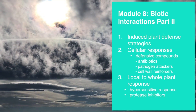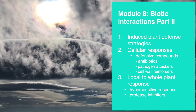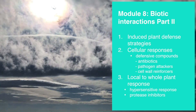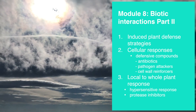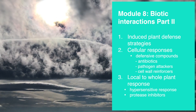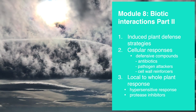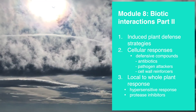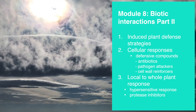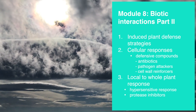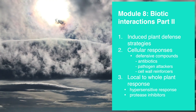That's it for today's module. Your main takeaway should be that plants have a variety of induced plant defense strategies against herbivores and pathogens. These range from cellular responses producing defensive compounds — including antibiotics, pathogen attackers, and cell wall reinforcers — to local and whole-plant responses, including the hypersensitive response at the cellular level and systemic acquired resistance at the whole-plant level, which includes things like protease inhibitors.